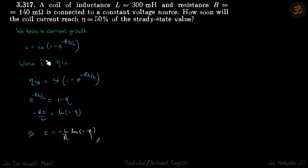So when Eta is equal to 50%, the current will become Eta I0. We just put the value here, I0 will get cancelled.